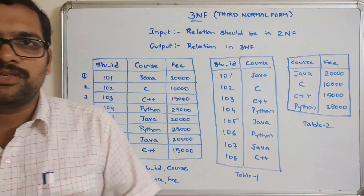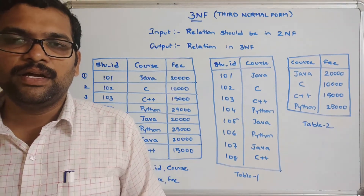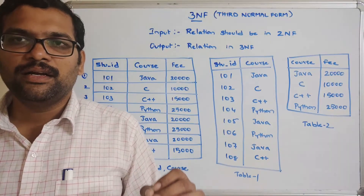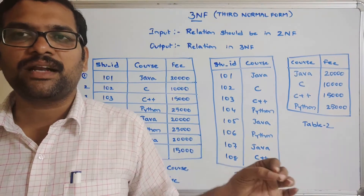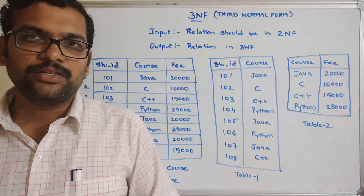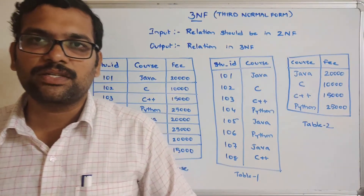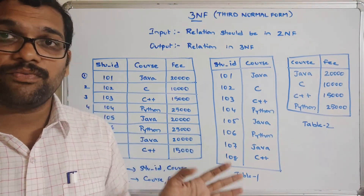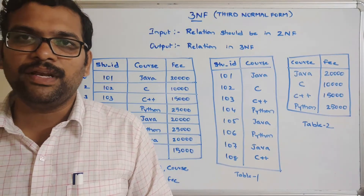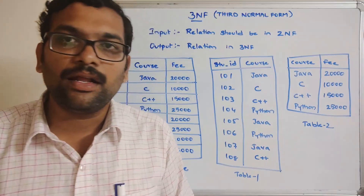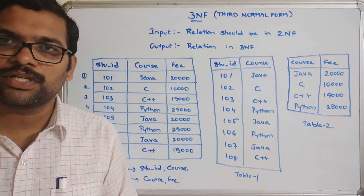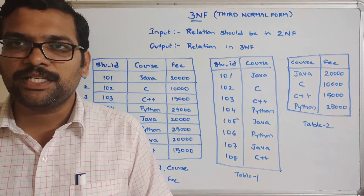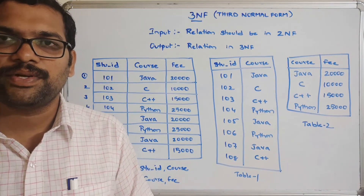This is how we convert a non-third normal form relation to third normal form. To summarize: for a relation to be in 3NF, two conditions must hold — the relation must be in 2NF, and it must not have any non-prime attributes involved in transitive dependencies. I will post the complete playlist in the description. If you have any doubts, post them in the comment section. If you enjoyed the session, like, share, and subscribe. Thanks for watching.